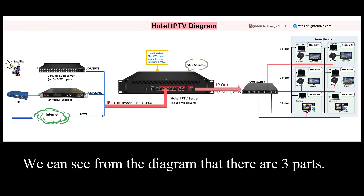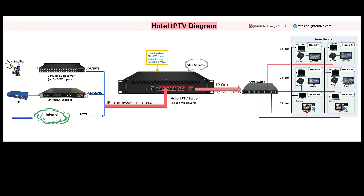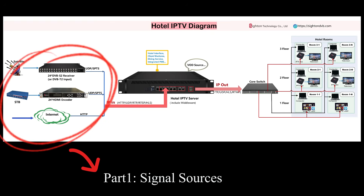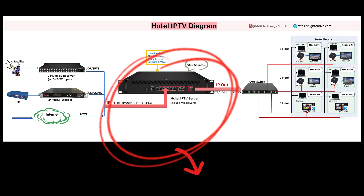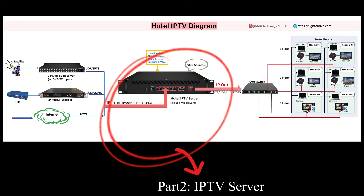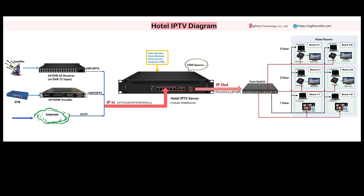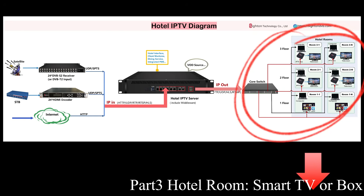We can see from the diagram that there are three parts. Part 1: Signal Sources. Part 2: IPTV Server. Part 3: Hotel Room — Smart TV or Box.